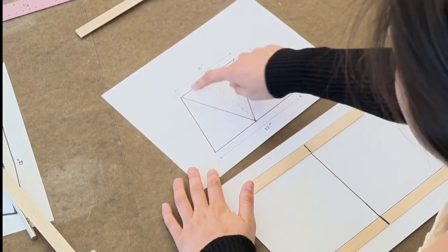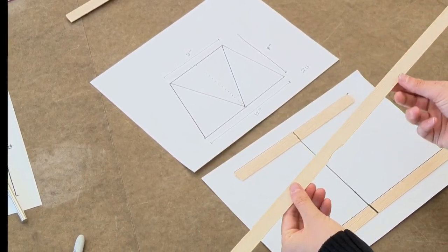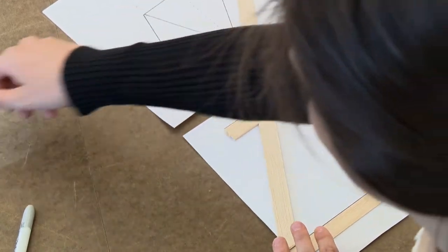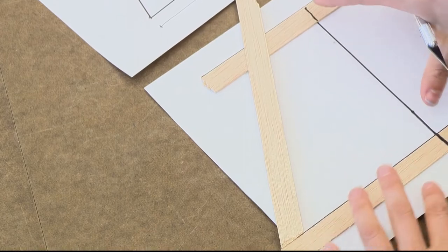So to construct my diagonal pieces, I'm going to take a longer piece of balsa wood and I'm going to actually cut the wood based on the distances that I see here.